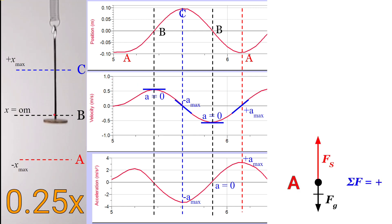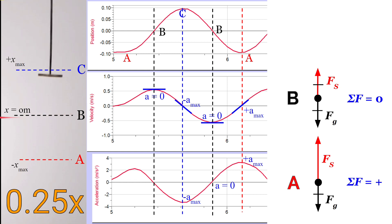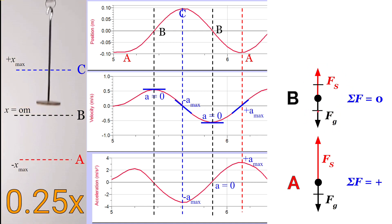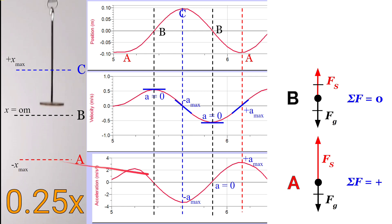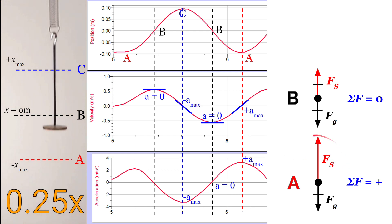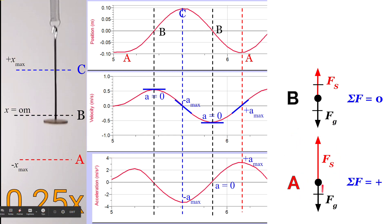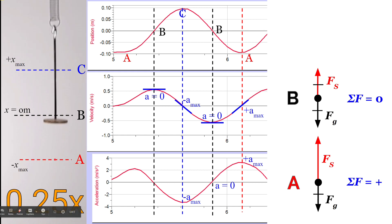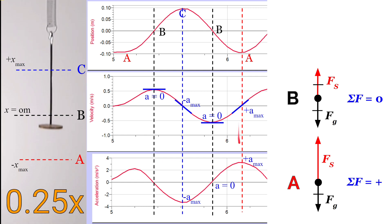At position A, when the mass is stretched down below its equilibrium position — at equilibrium, the sum of all the forces on the mass is zero, meaning the force of gravity pulling down equals the spring force pulling up. When the mass is pulled below position B to position A, the force of gravity doesn't change. But if the spring is stretched farther, the spring force has to be larger. So at position A, the sum of the forces on that object has to be positive — pointed up. And so at position A, if the sum of the forces is positive, we would expect the acceleration is also positive.